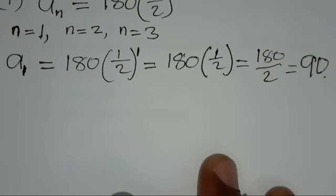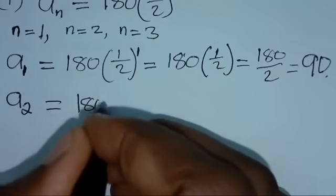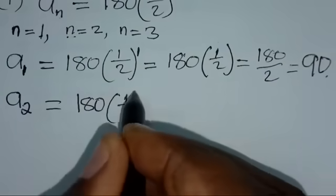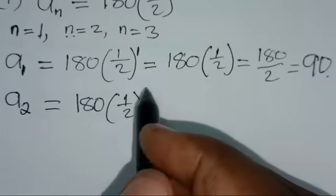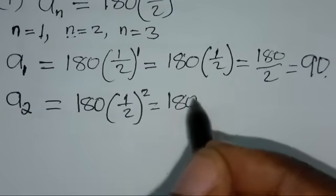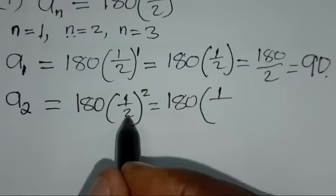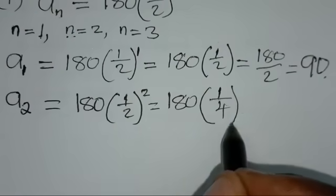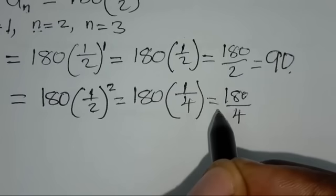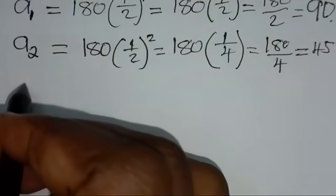For the second term, a2 equals 180 times (1/2) to the power 2. Since 1 squared is 1 and 2 squared is 4, we have 180 divided by 4, which gives us 45.